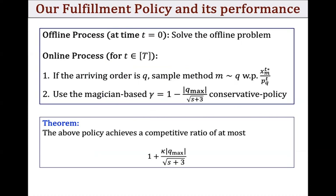Combining the offline and online processes, we prove that our policy achieves a competitive ratio of at most 1 plus kappa times cardinality of Q_max divided by square root of s plus 3. To briefly summarize, our fulfillment policy first solves a relaxation of the offline problem, then in the online process samples a method according to this solution, and in the second step applies a magician-based gamma-conservative policy.